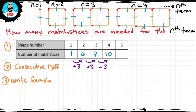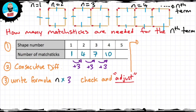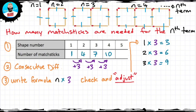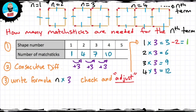So I'm going to try to write a formula — that's n times 3. Let's check if it actually works, and if we need to, we'll make an adjustment. One times 3 gives me 3, but I want 1. Two times 3 gives me 6, but I need 4. Three times 3 gives me 9, but I want 7. Four times 3 gives me 12, but I want 10. So we definitely need an adjustment — and it's minus 2.